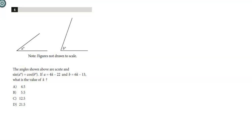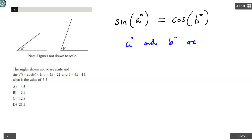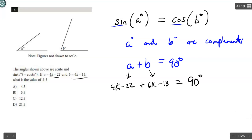Number 4. The angles above are acute, and the sine of A equals the cosine of B. The only way that's true is if A and B are complements. Complements mean that A plus B equals 90 degrees. That's the only time that the sine of a number and the cosine of a number are going to be equal to each other. So they give me some algebra, and they say that angle A is 4K minus 22. And angle B is 6K minus 13.